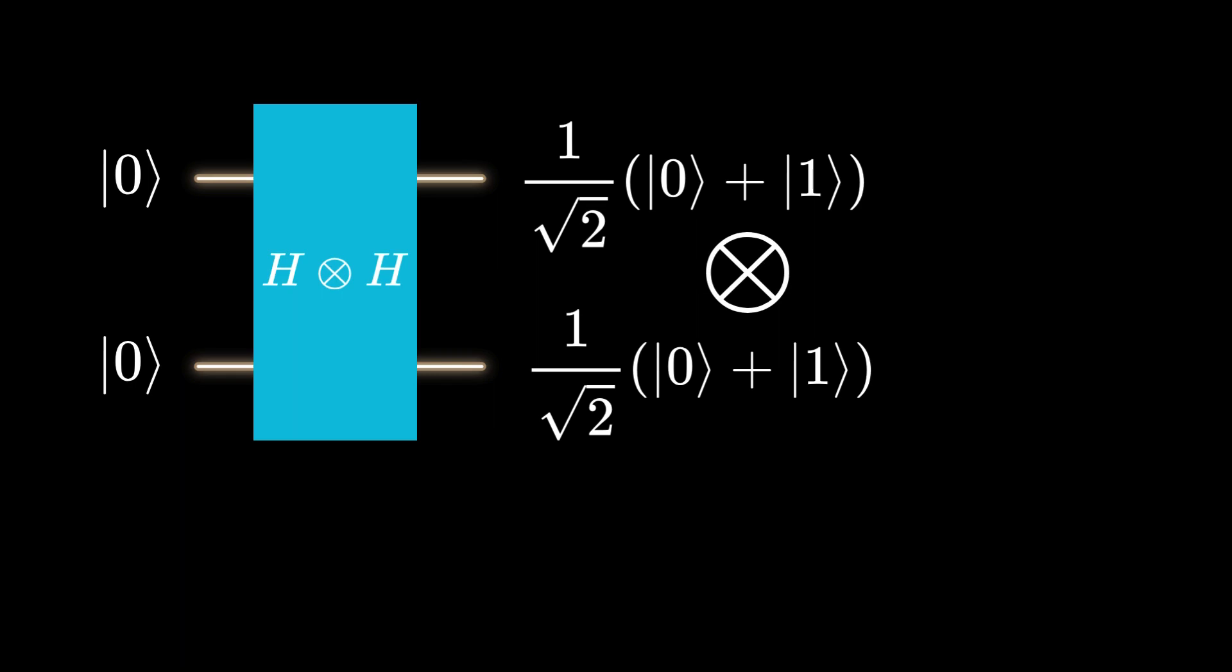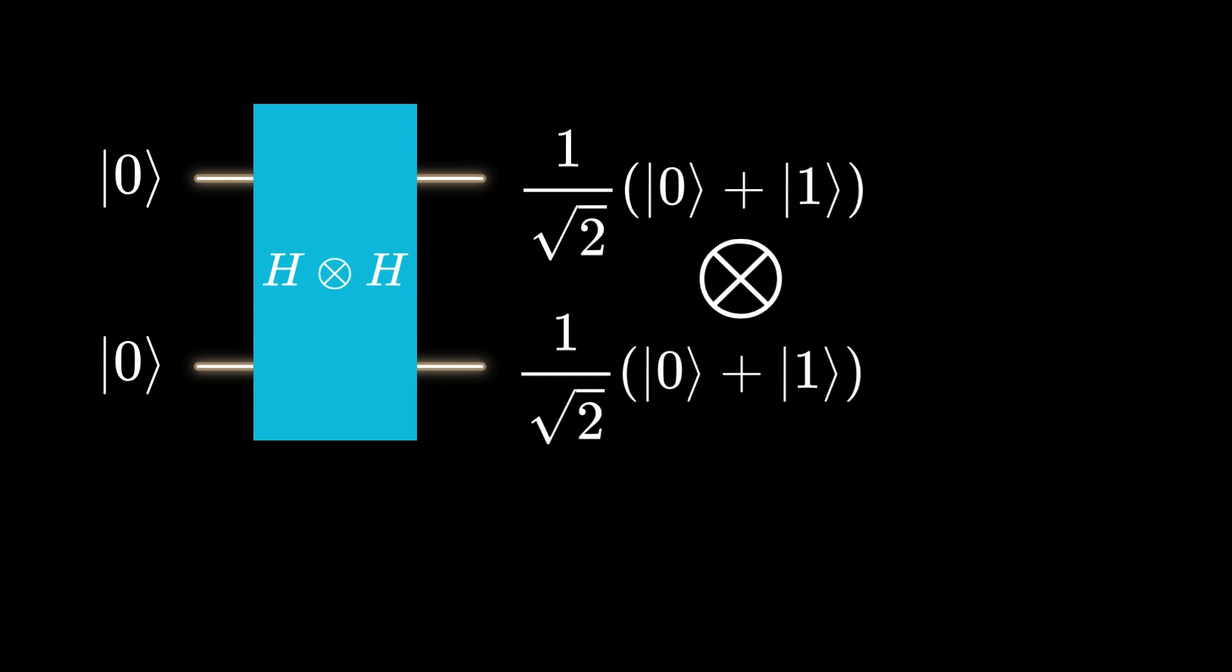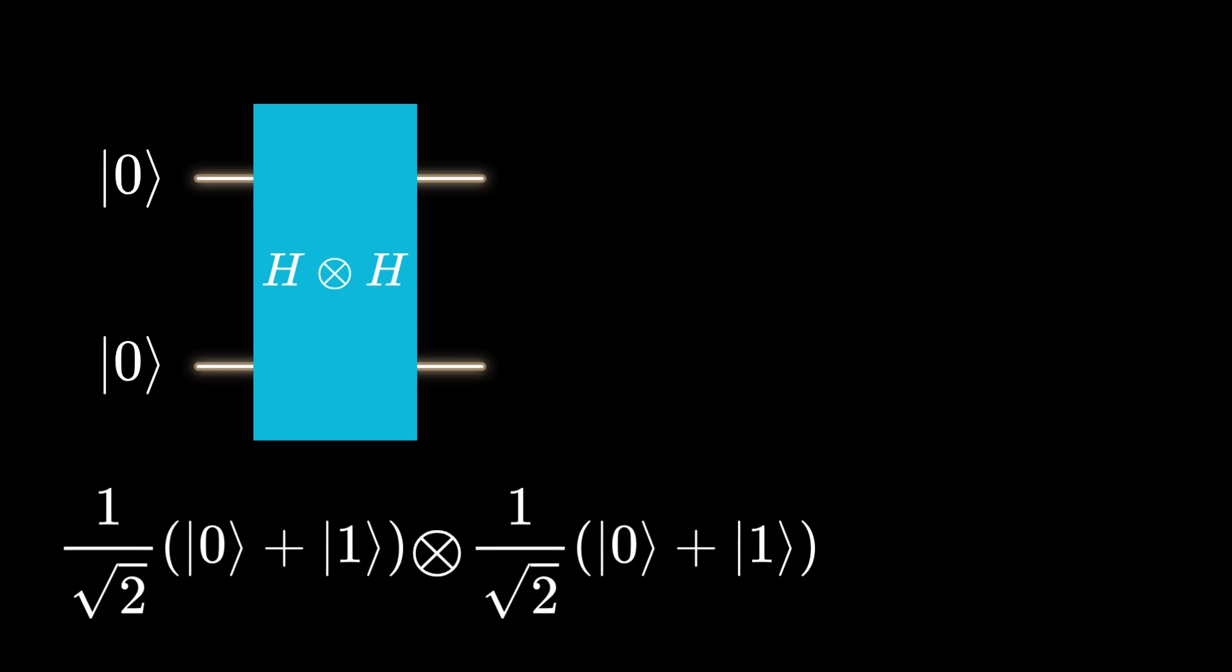With the input 0 and 0, the output is a tensor product of the state plus and plus. Upon rearrangement, we observe that the output is a superposition of a binary representation of the numbers 0, 1, 2, and 3.